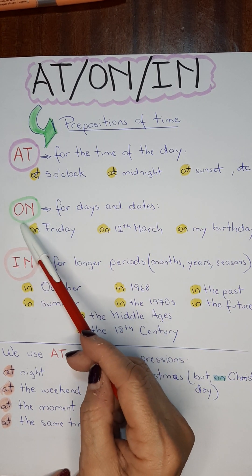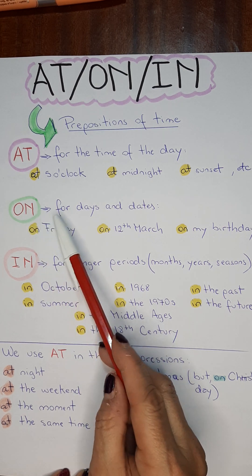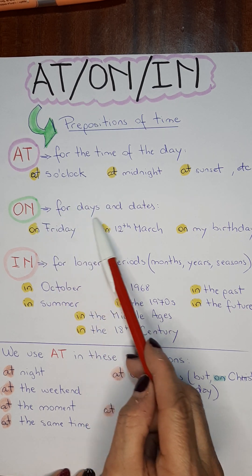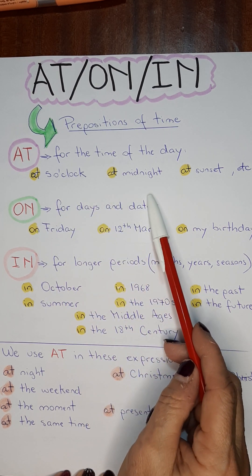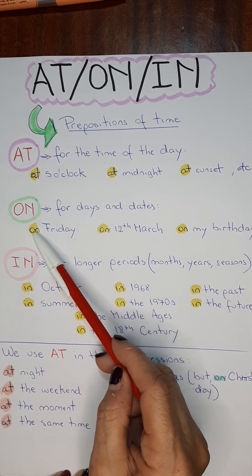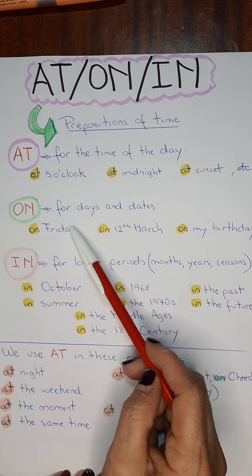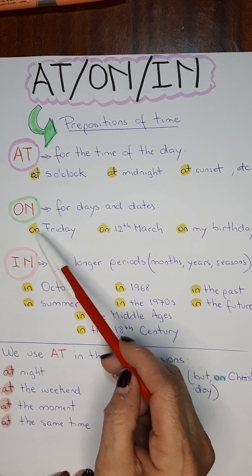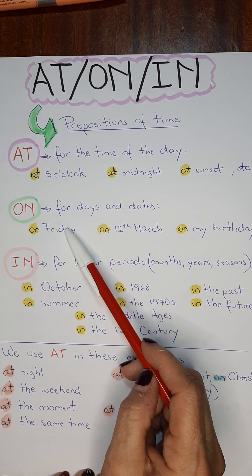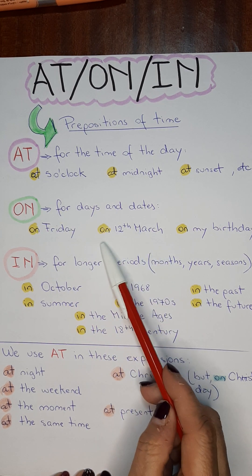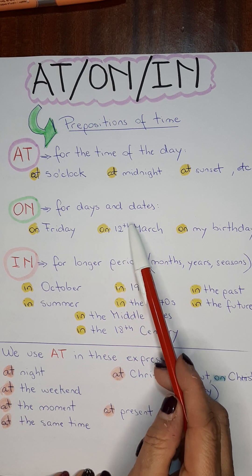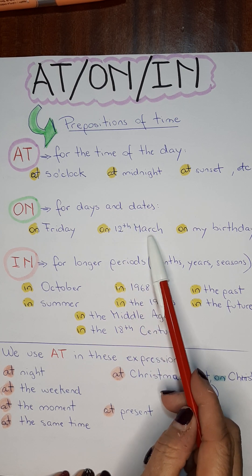We use on for days and dates. For example, on Friday, on Monday — days. On the 12th of March.